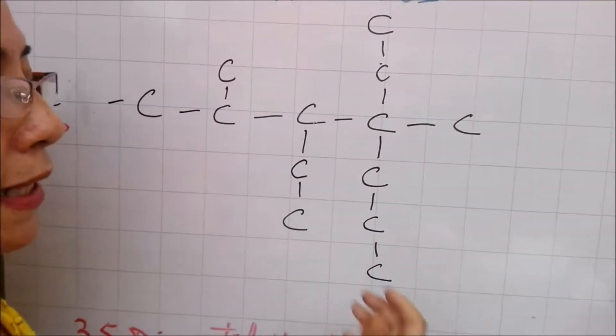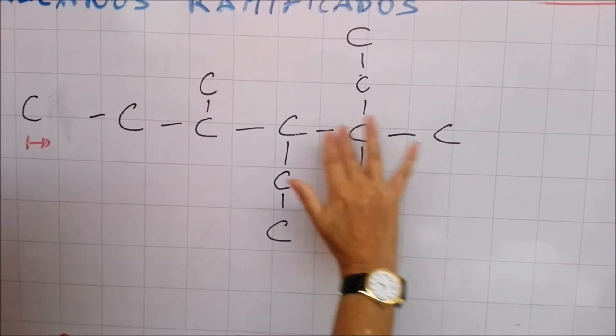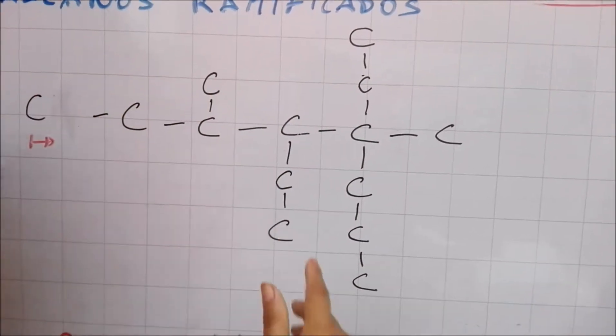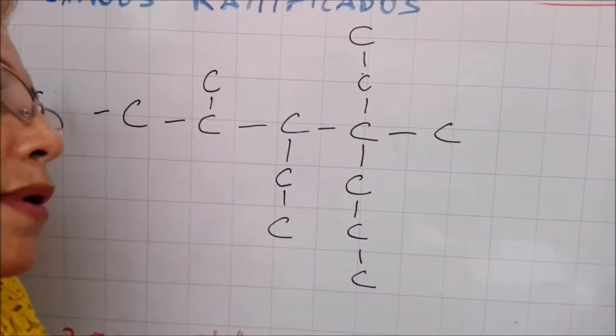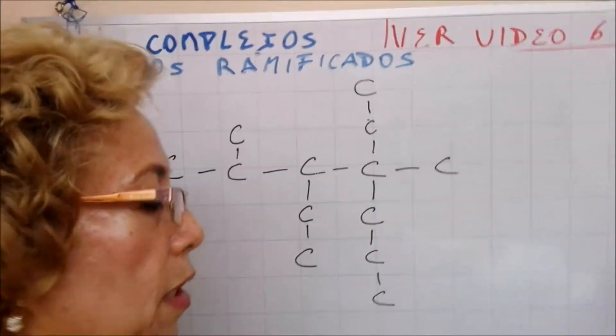Pero en cambio, si yo lo tomo tomando en cuenta el sustituyente, en vez de tener seis, mira lo que tengo: uno, dos, tres, cuatro, cinco, seis, siete, ocho. Y te recuerdo que según IUPAC, hay que buscar el que tenga mayor número de carbonos siguiendo una dirección.